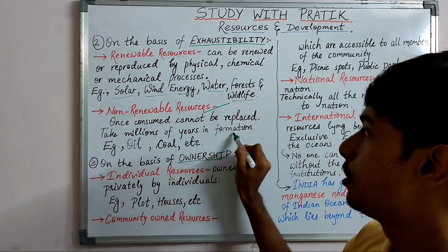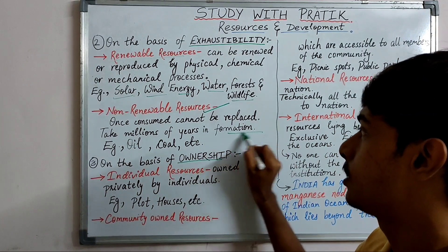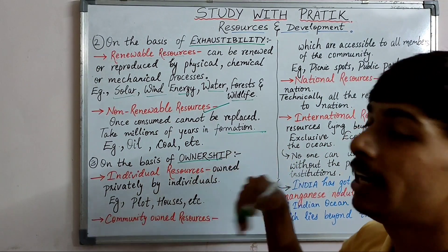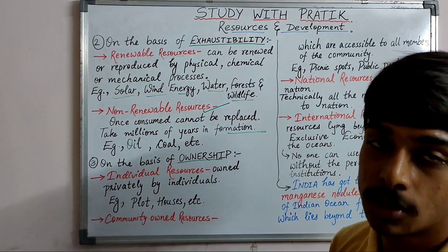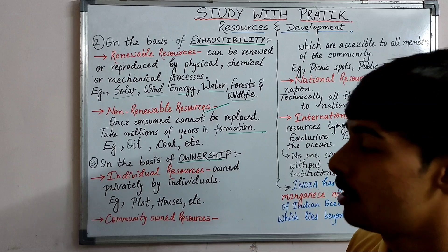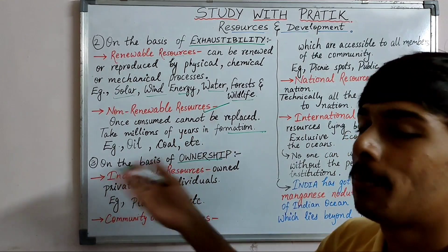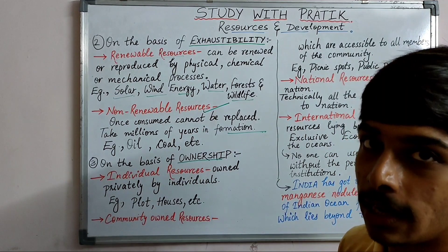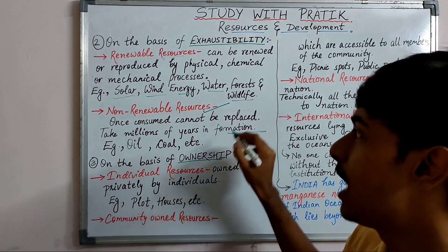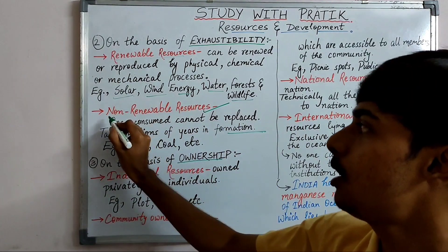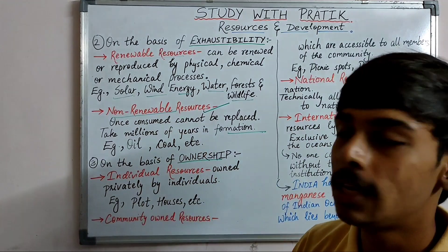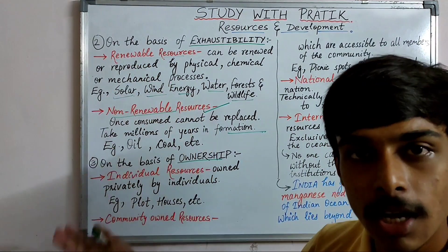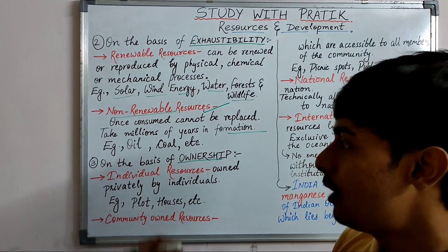Non-renewable resources take millions of years to form. It takes lakhs and thousands of years to renew them, which is why they are called non-renewable — because they cannot be renewed. Renewable means which can be renewed.